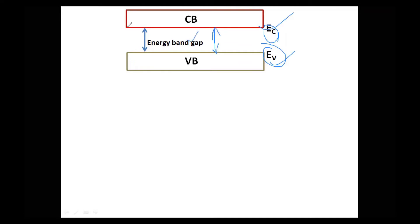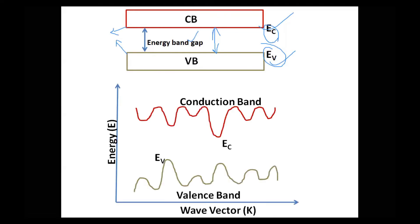If you observe clearly, the bottom of the conduction band and top of the valence band appear smooth and highly flat in the idealized diagram — this is a highly ideal case. In reality, the conduction band and valence band look different: the red curve represents the bottom of the conduction band and the green color represents the top of the valence band. They are not smooth or flat; instead, they have heights and depths.